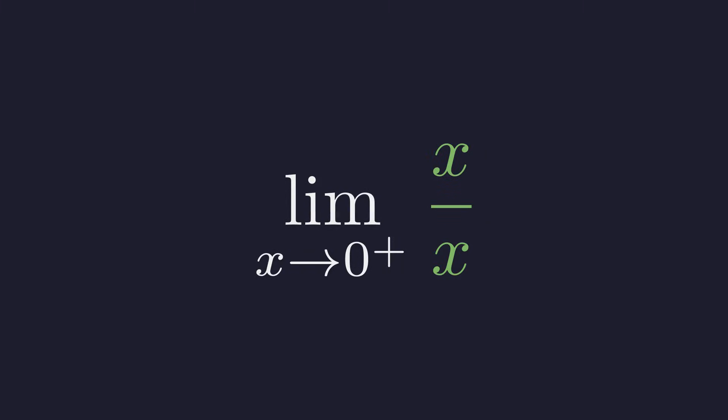As long as x is not exactly zero, which is true in a limit, x divided by x simplifies to one. This leaves us with the limit of the constant one. The limit of any constant is the constant itself. The right-hand limit is one.